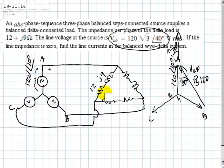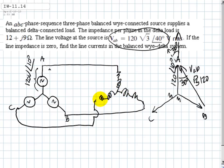What about this source? I don't like working with delta, so let me convert that delta into a wye. I divide that by 3. This would be 4 plus j3. So the equivalent wye will be 4 ohms and j3.